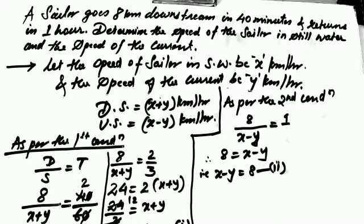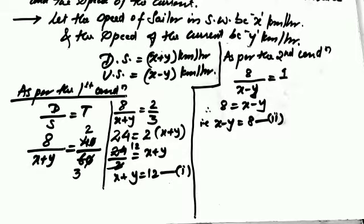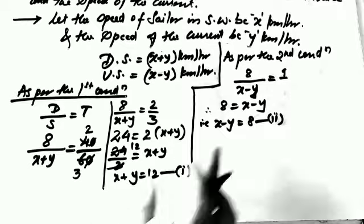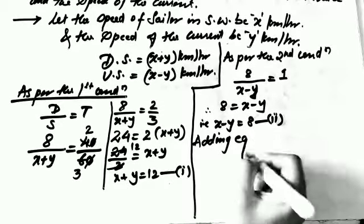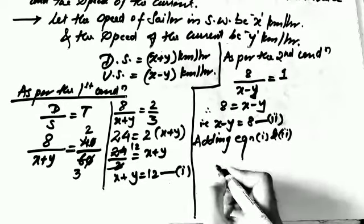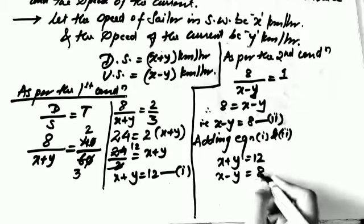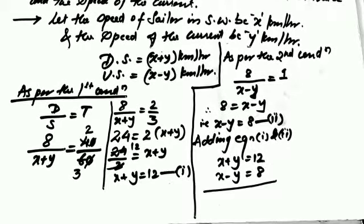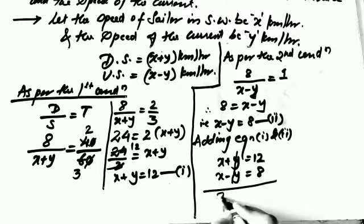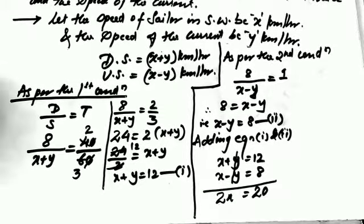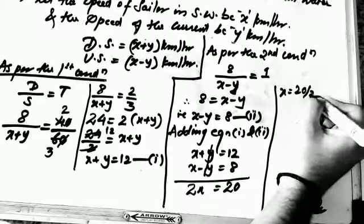Now we have Equation 1: x plus y equals 12, and Equation 2: x minus y equals 8. The most convenient method here is the elimination method, because plus y and minus y will cancel when we add both equations. Adding them: x plus y plus x minus y gives 2x equals 20. So x equals 20 divided by 2, which is 10.